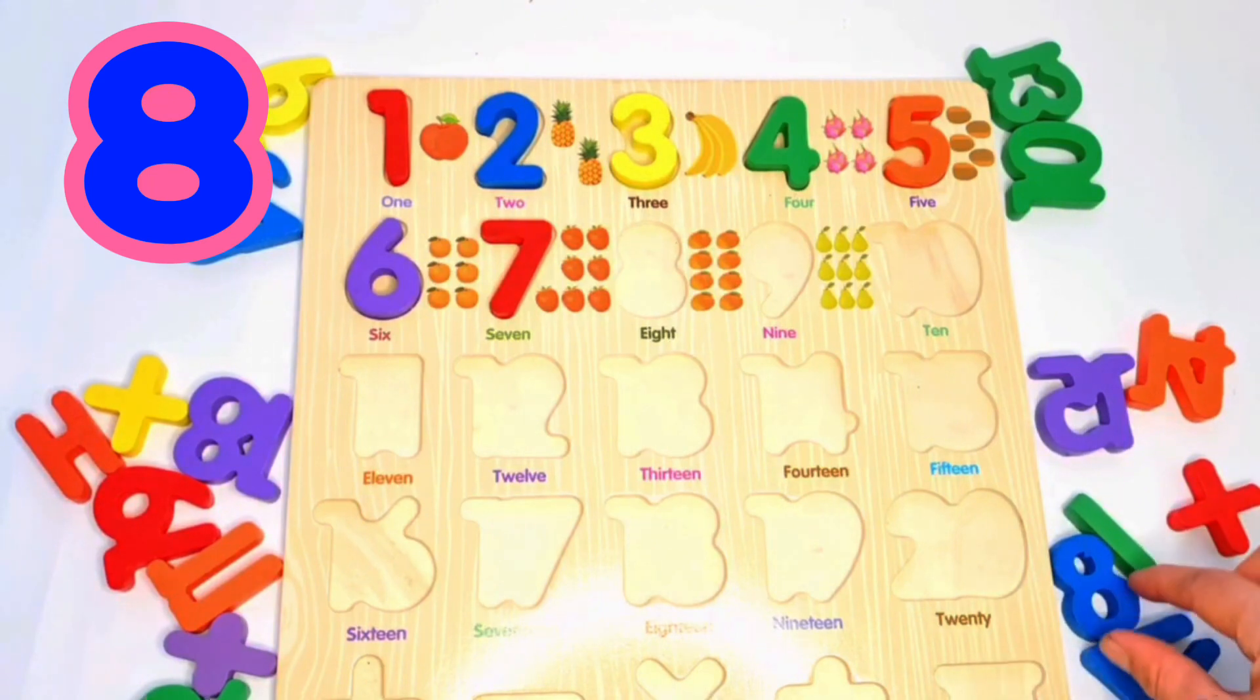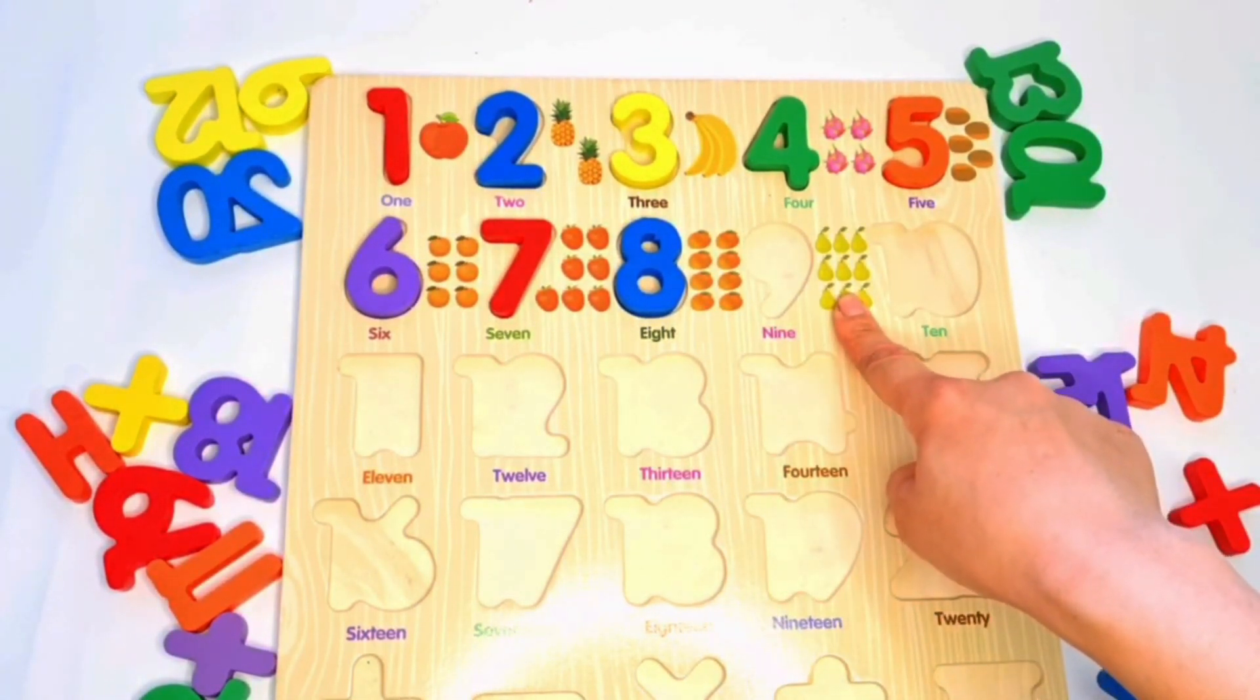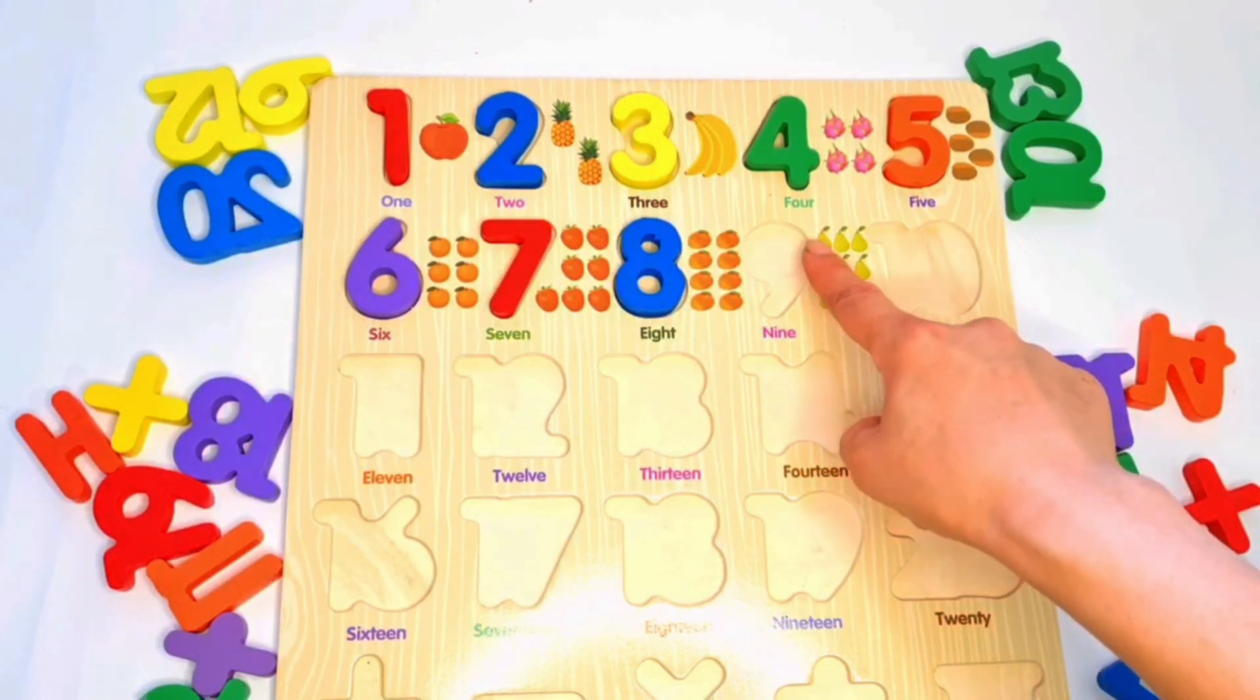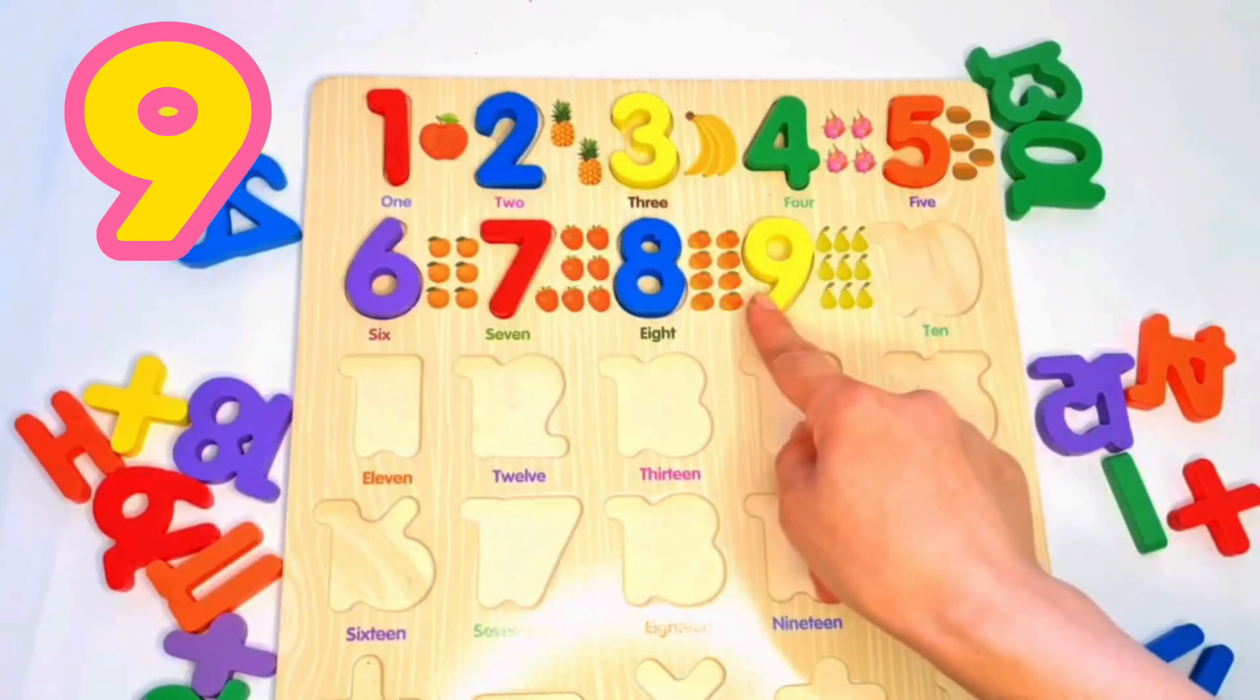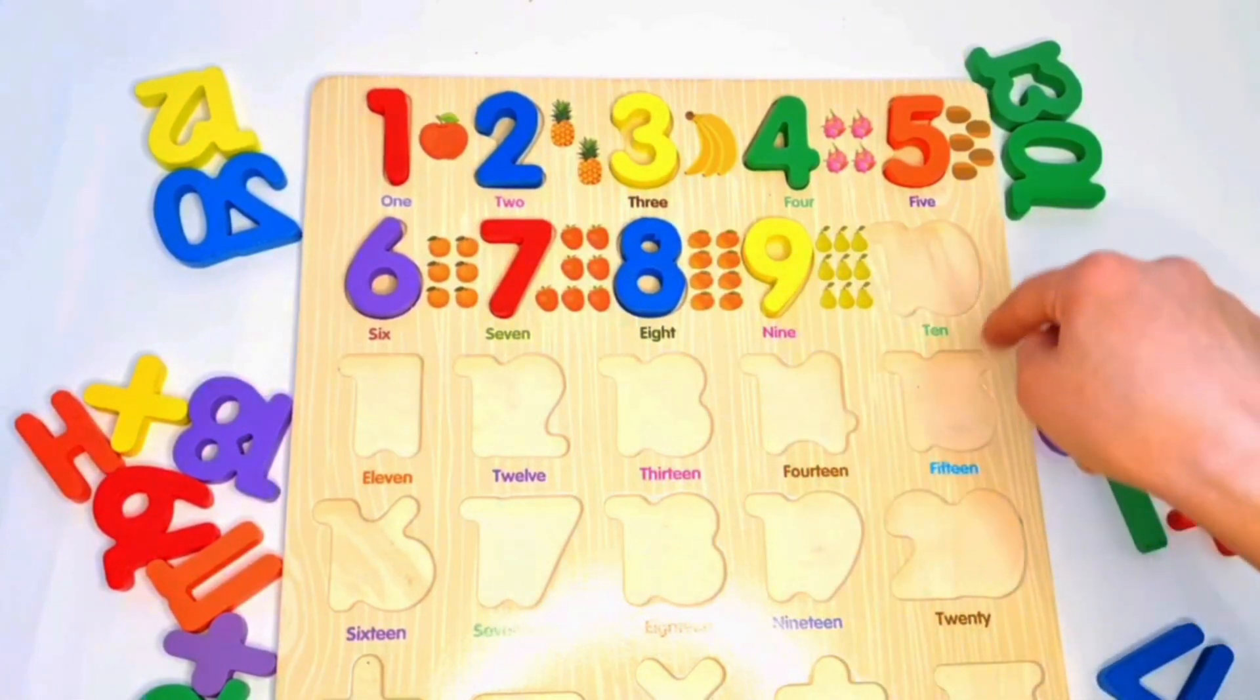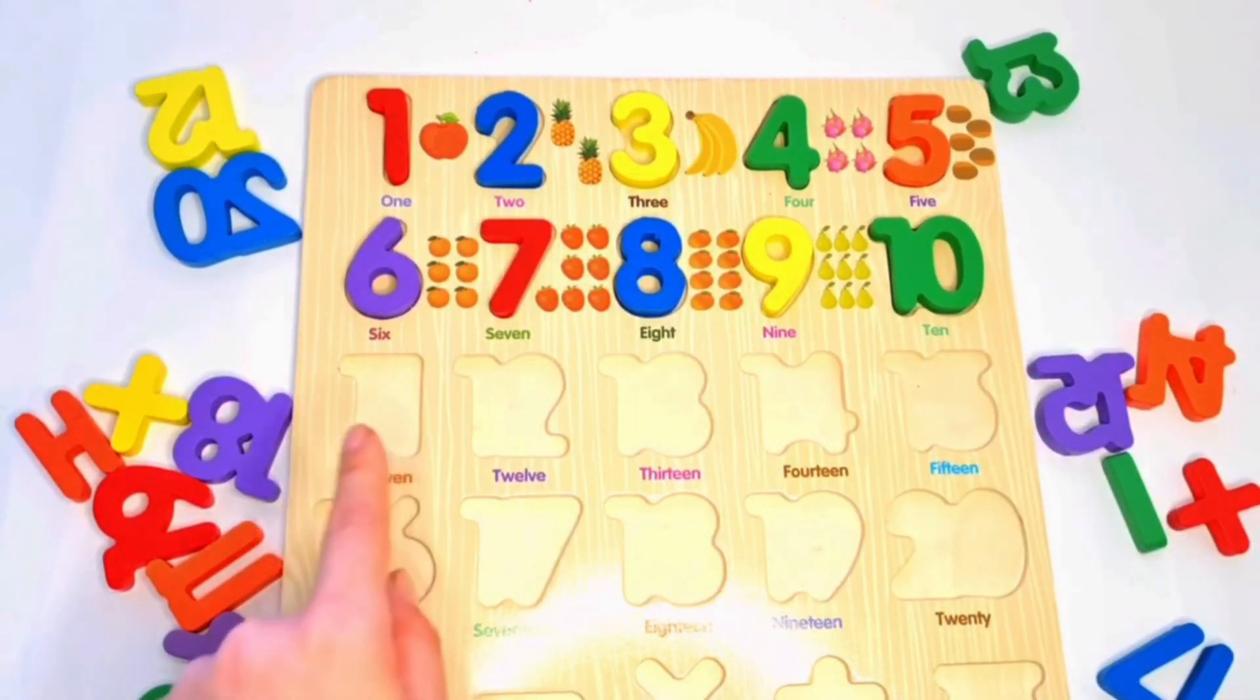Yeah, here blue eight. Next we put here one two three four five six seven eight nine. Nine, our nine number here. Yellow yellow, yellow nine. And here, after nine we will put here ten. Ten, green ten.